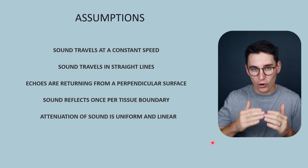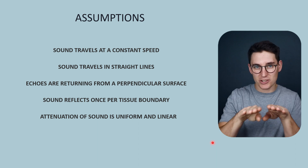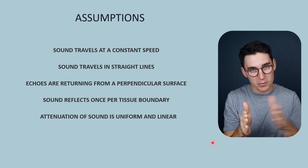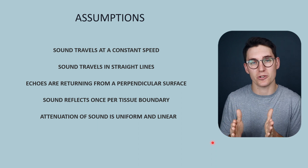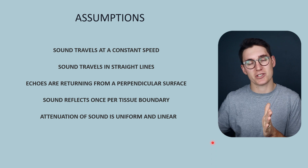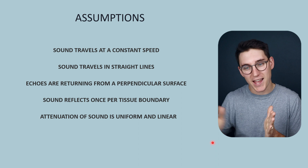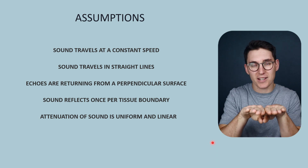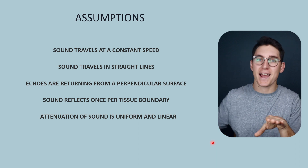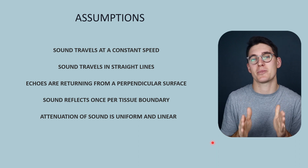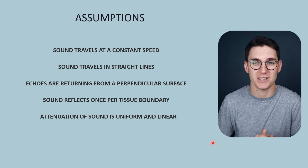It also assumes that sound only reflects off a tissue boundary once. When sound comes into contact with a tissue boundary, some will echo back towards the ultrasound machine and some will be transmitted through the tissue. That transmitted wave will also send back echoes, which will again contact that tissue boundary and some of that echoed wave will echo back into the tissues. The ultrasound machine assumes that doesn't happen — that there aren't multiple echoes between tissue boundaries.